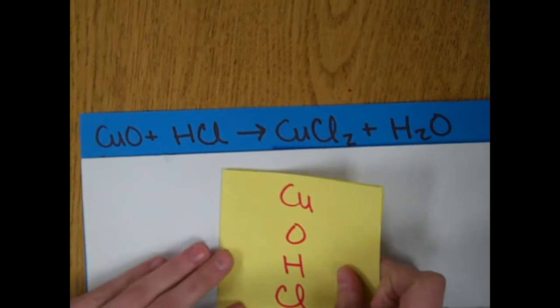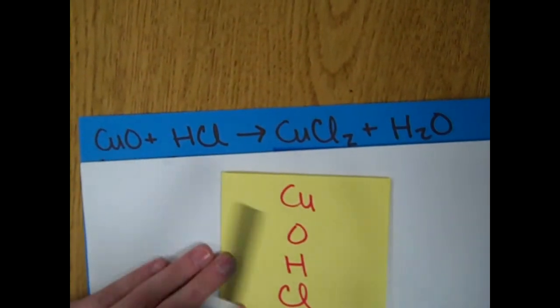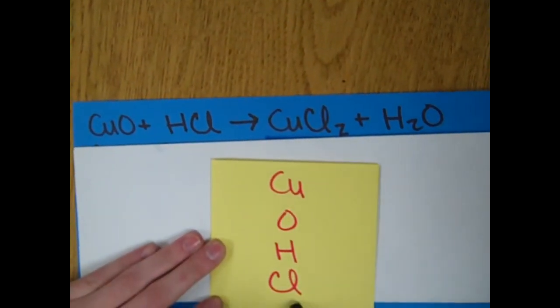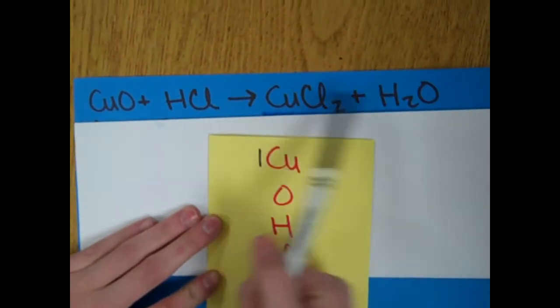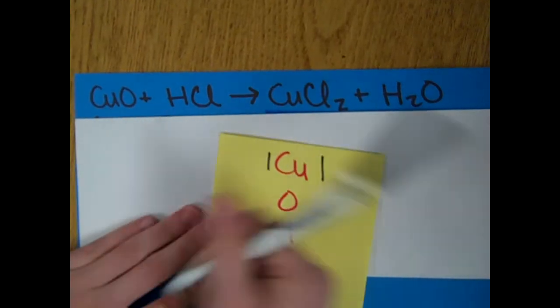So, the elements are copper, oxygen, hydrogen, and chloride. There is one copper on this side, one on the other, one oxygen,